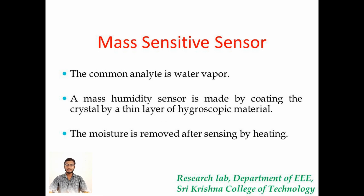The most common analyte in mass sensitive sensors is water vapor, and mass sensitive sensors also come under humidity sensors. The humidity sensor is made by coating a thin layer of hygroscopic material on a crystal. The hygroscopic material may be polymer, gelatin, silicon or fluoride. The moisture is removed after sensing by heat.